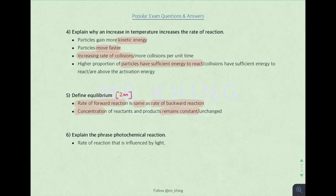Next one. So explain the phrase photochemical reaction. It means rate of reaction that is influenced by light.